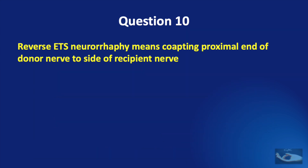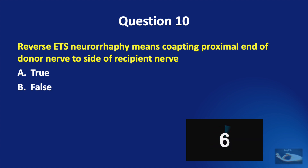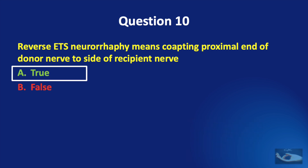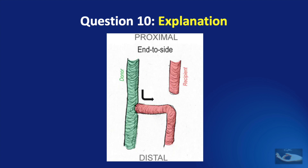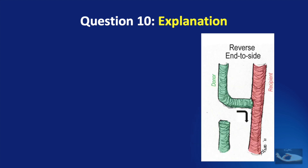Question number ten: reverse end-to-side neurorrhaphy means co-opting the proximal end of the donor nerve to the side of the recipient nerve — true or false? The answer is true. In standard end-to-end neurorrhaphy, the proximal cut end of the donor is co-opted to the distal cut end of the recipient. In antegrade end-to-side neurorrhaphy, the distal cut end of the recipient is co-opted to the side of the intact donor nerve. In reverse end-to-side neurorrhaphy, the proximal cut end of the donor nerve is co-opted to the side of the intact recipient nerve.